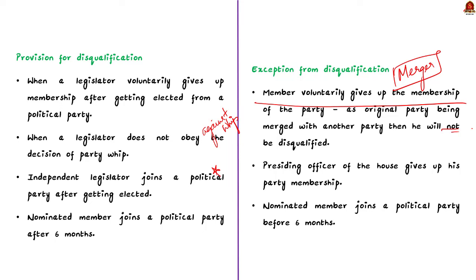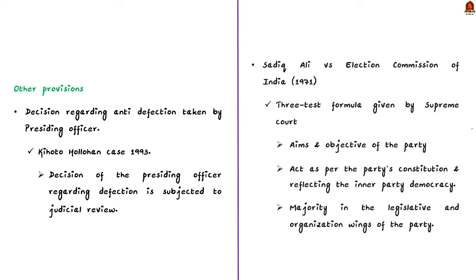Who makes the decision regarding disqualification of legislators under anti-defection law? Any question regarding disqualification arising out of defection will be decided by the presiding officer of the house. Originally, the act provided that the decision of the presiding officer is final and cannot be questioned in any court, but this was made unconstitutional by the Supreme Court in the Kihoto Hollohan case of 1993. Apart from this, in Siddik Ali versus Election Commission of India 1971, the Supreme Court laid down the three-test formula for determining which faction is to be recognized as the original political party by the Election Commission.